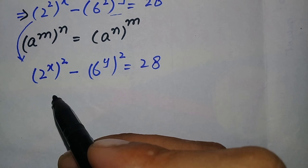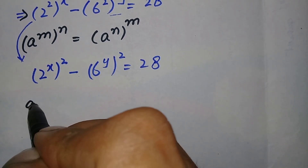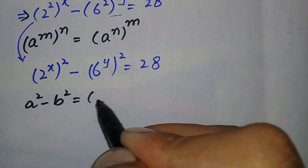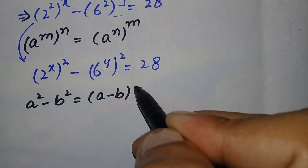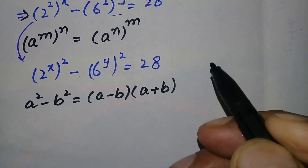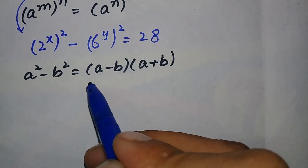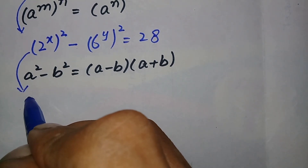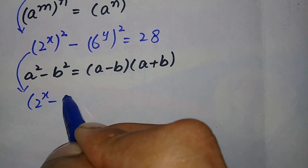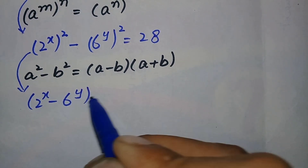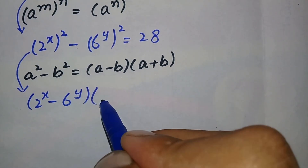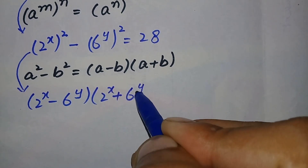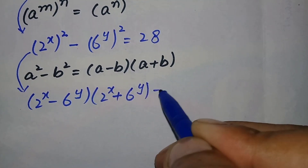We will now use the algebraic identity: a squared minus b squared equals (a minus b) times (a plus b). Applying this identity, the equation can be written as (2 raised to power x minus 6 raised to power y) times (2 raised to power x plus 6 raised to power y) is equal to 28.